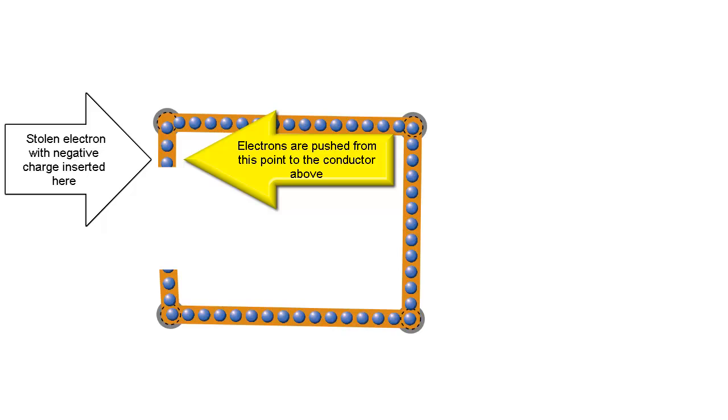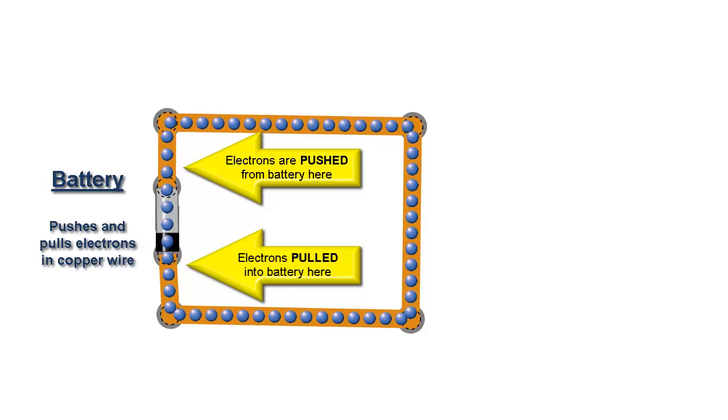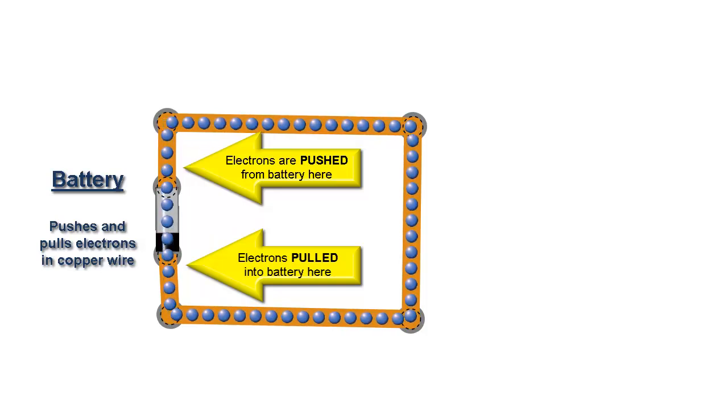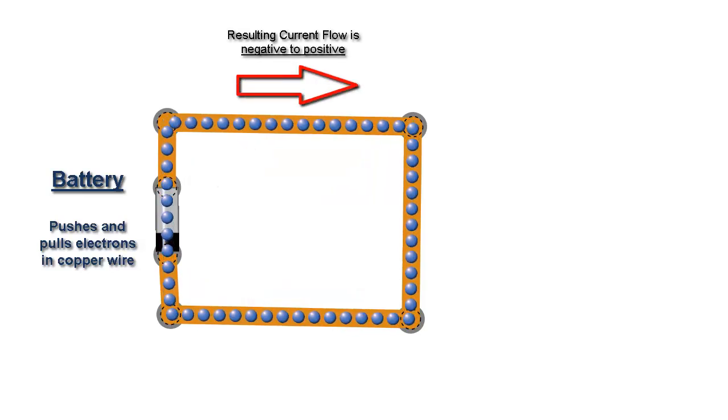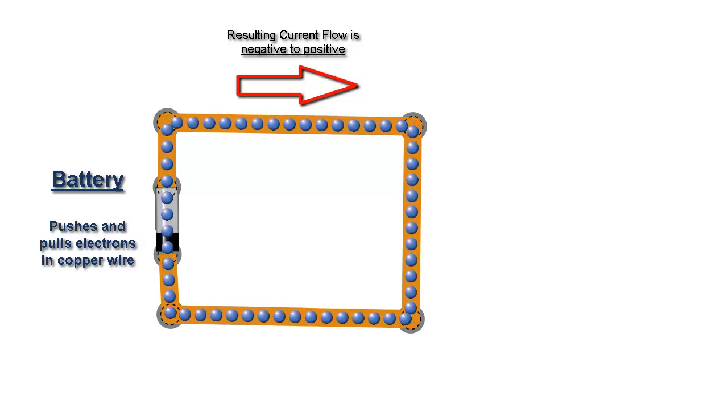Now a better way to build a circuit obviously would be to have something that continually pumps electrons around, and that's what we do. We use a device called a battery, and so a battery just continually pumps electrons around in circles. And we can use these moving electrons to do work and to accomplish many different tasks.